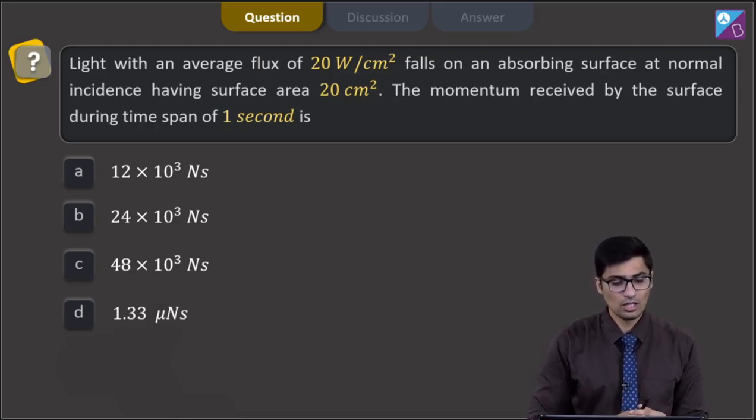and there are 4 options: 12 into 10 raised to the power 3 Newton seconds, 24 into 10 raised to the power 3 Newton seconds, 48 into 10 raised to the power 3 Newton seconds, or 1.33 micronewton per seconds.